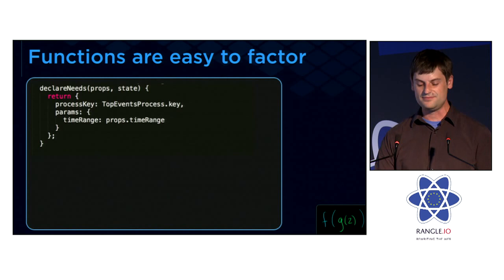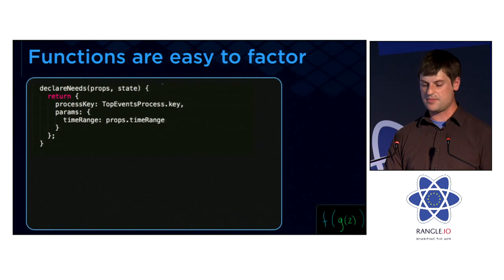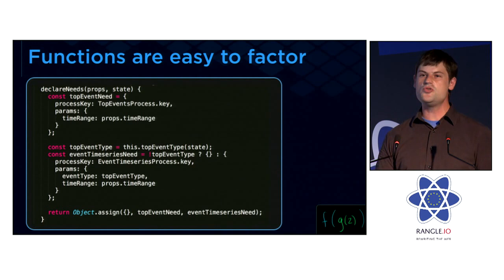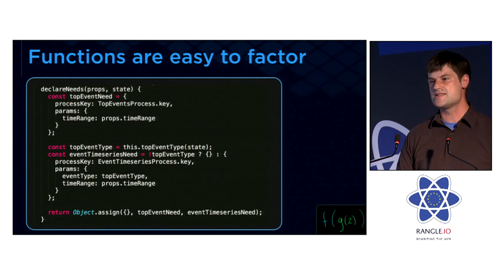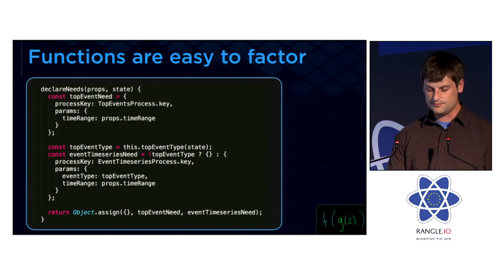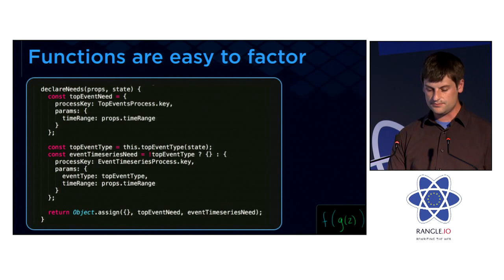Some benefits: functions are really easy to think about, factor, and test. This example shows a component that needs one type of data from the server — a process getting information about the top events happening in that app. Here I changed it so the component now needs two different pieces of information depending on what state it's in: if there is a top event, then I also need this other piece of information. It's really clear, easy to express, and co-located with the component. The Relay and GraphQL teams are really onto something here — this is so powerful, easy to reason about, and easy to test because it's just a plain function.